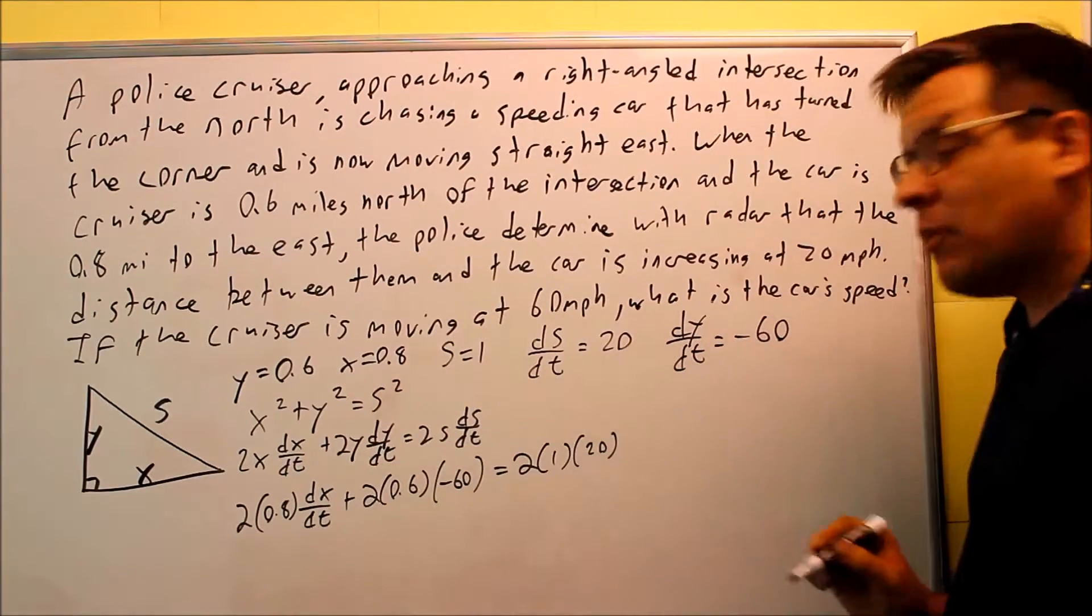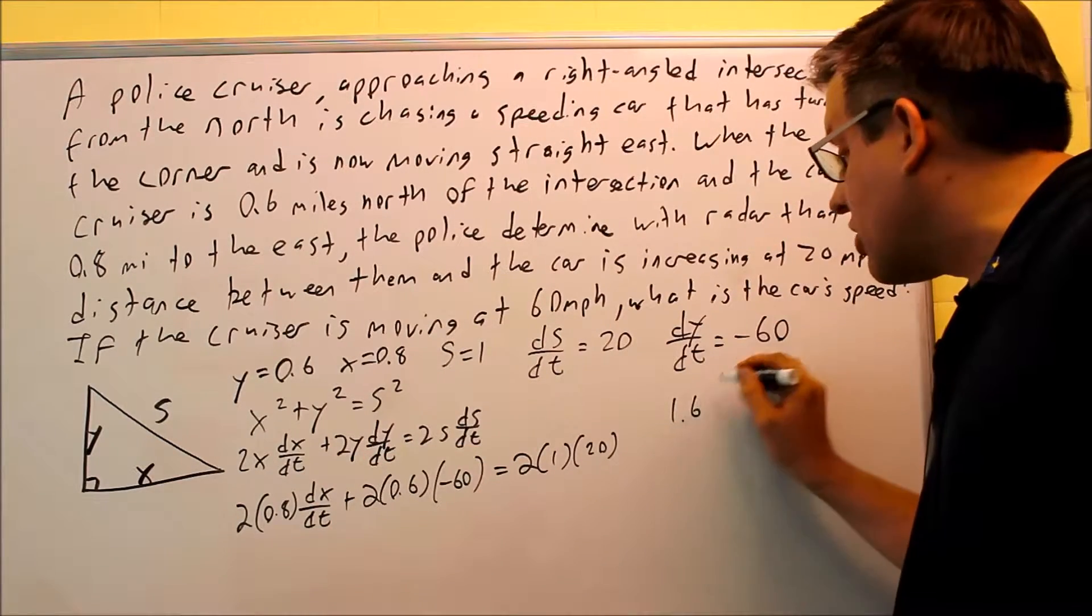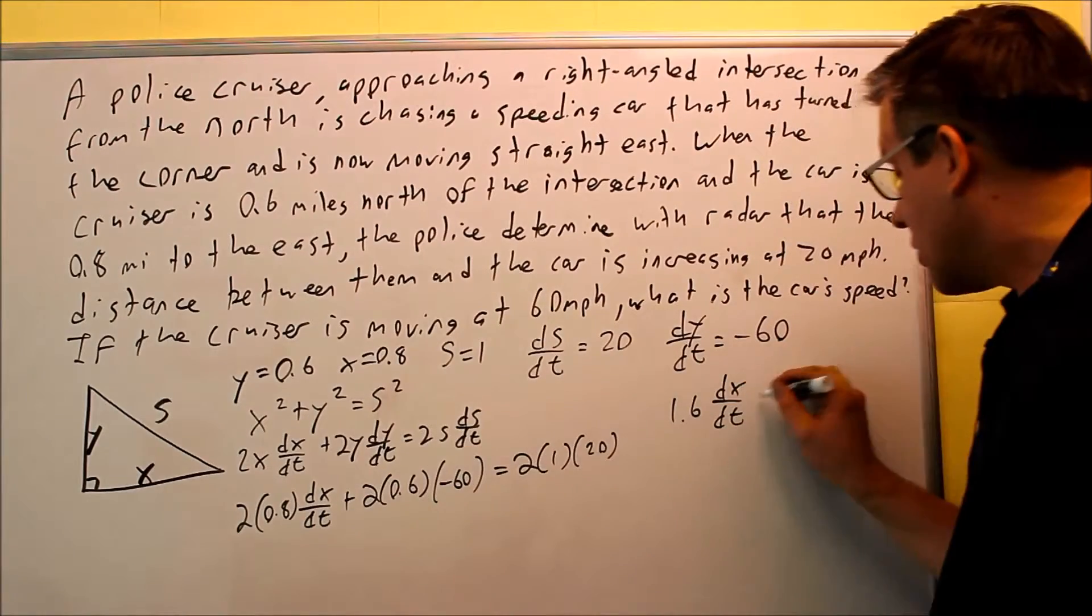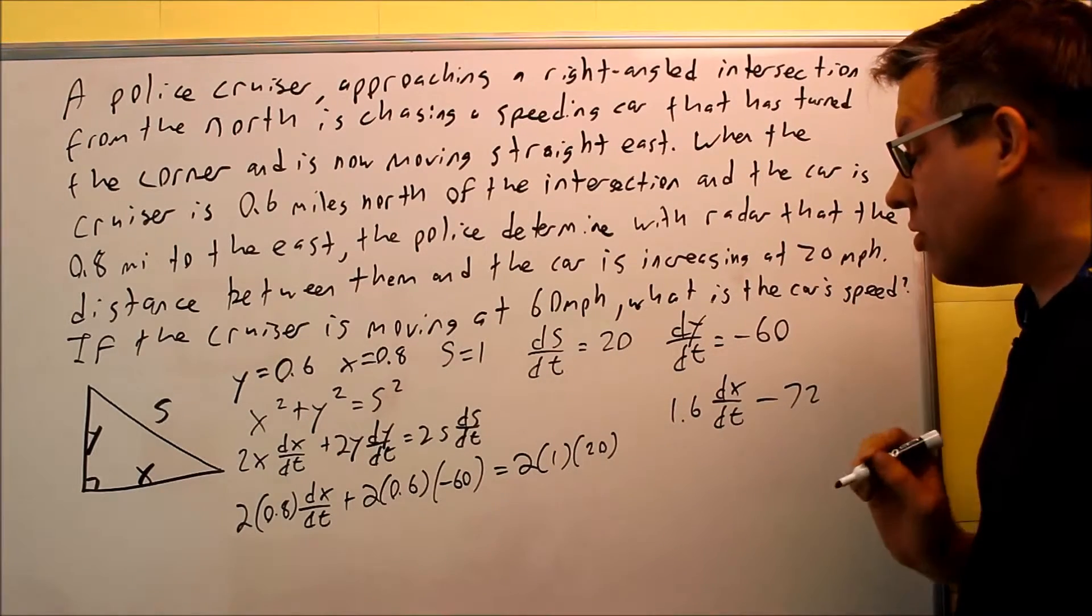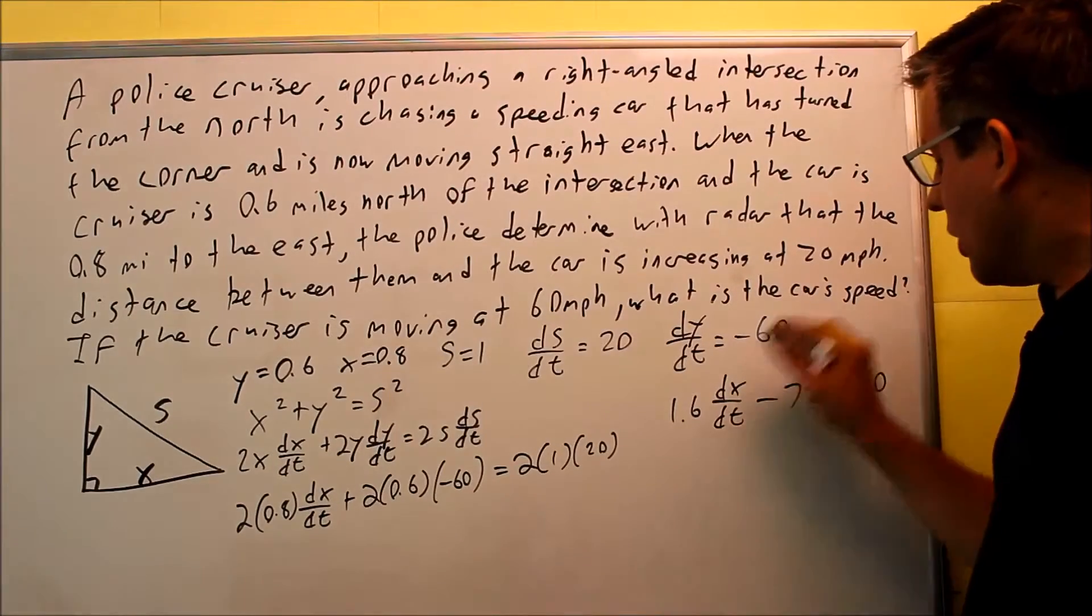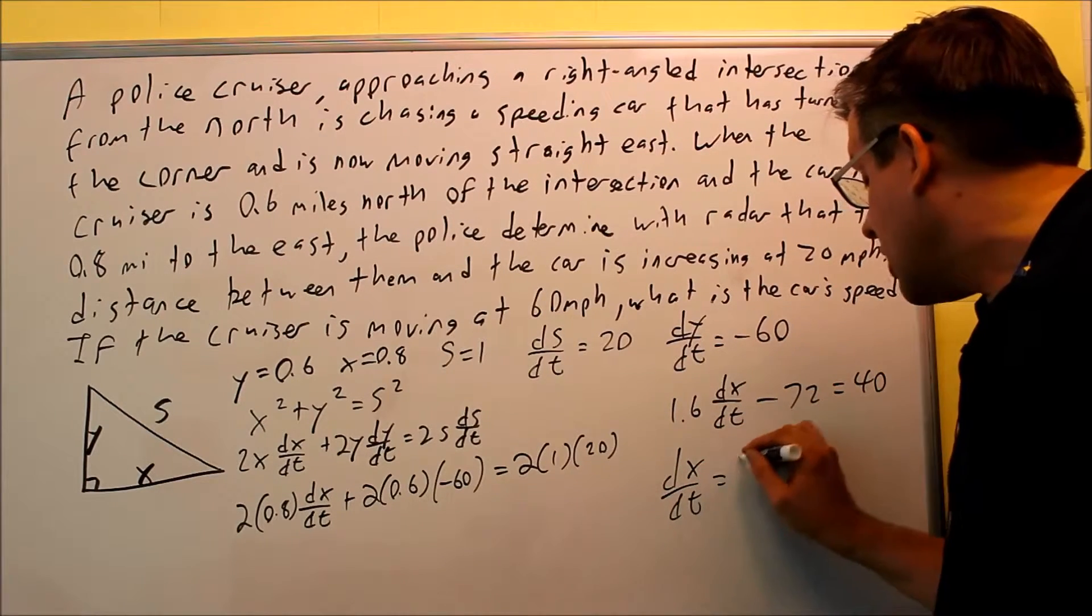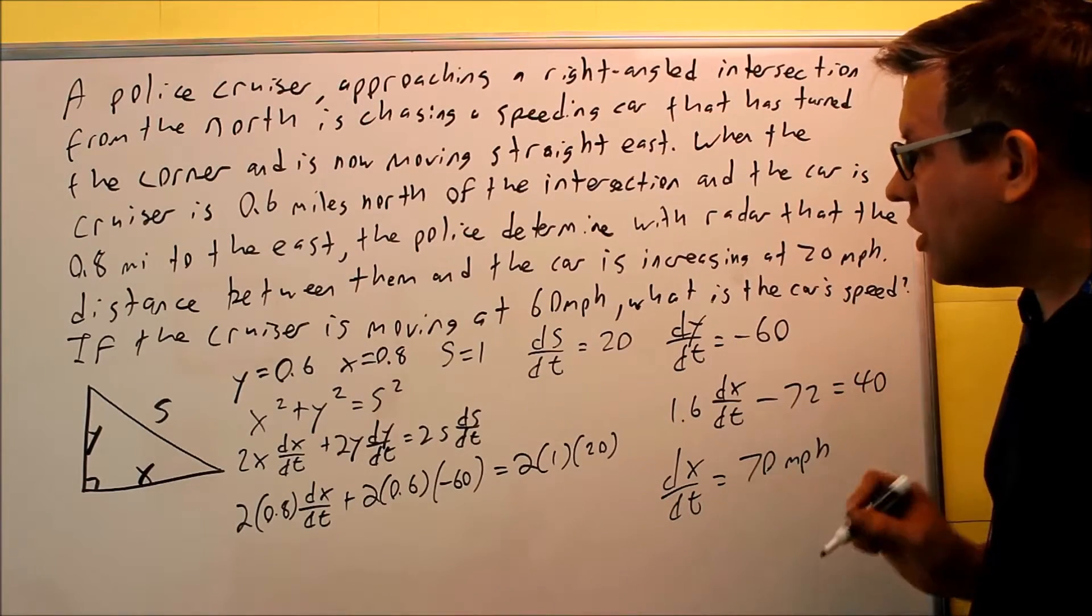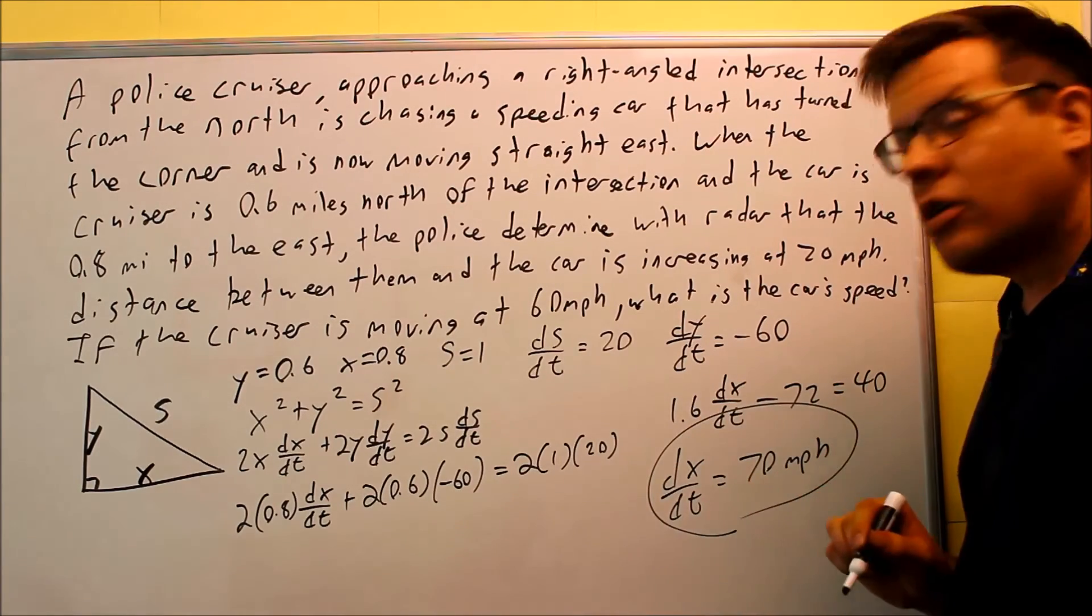Okay, so now that I have this line, I'm ready to start solving for DX/DT. 2 times 0.8, 1.6 DX/DT. I got a minus on that one. If I multiply this together, we're going to get 72, and then we get 40 on the other side. If you add 72, divide by 1.6, I'll just give the final answer. DX/DT should be 70 miles per hour. So that's how fast the car is actually moving at that time. This would be your final answer.